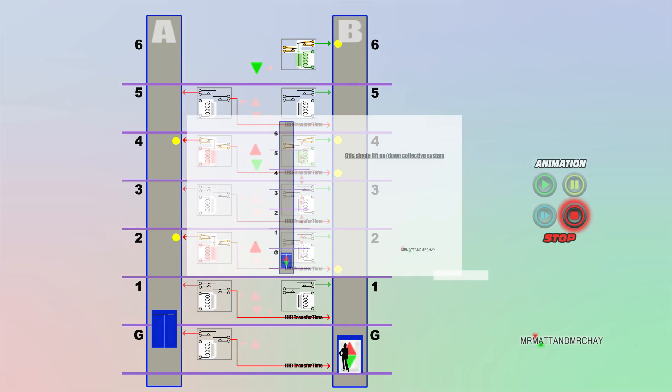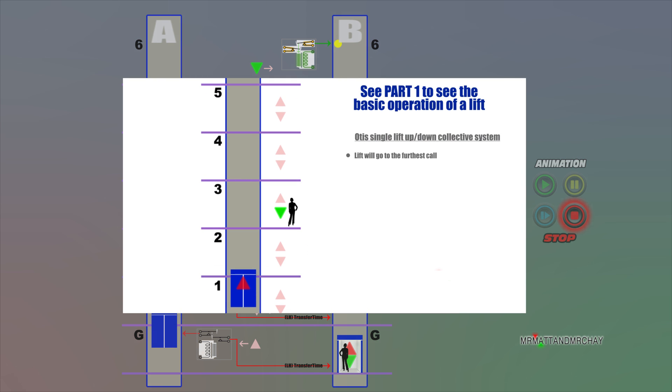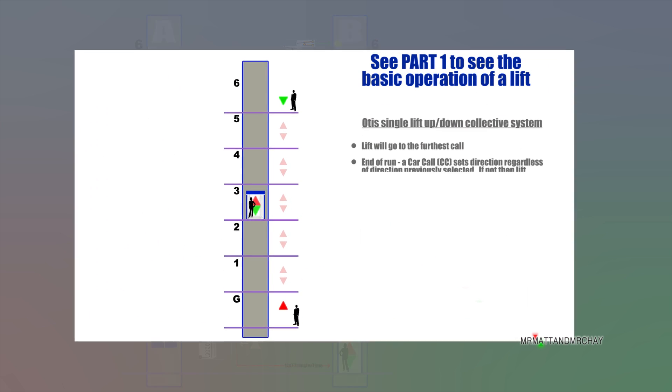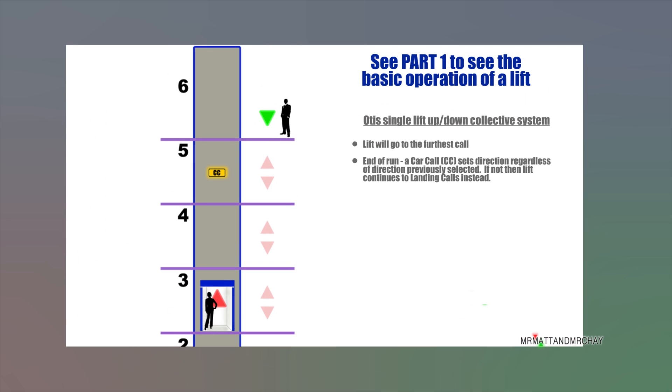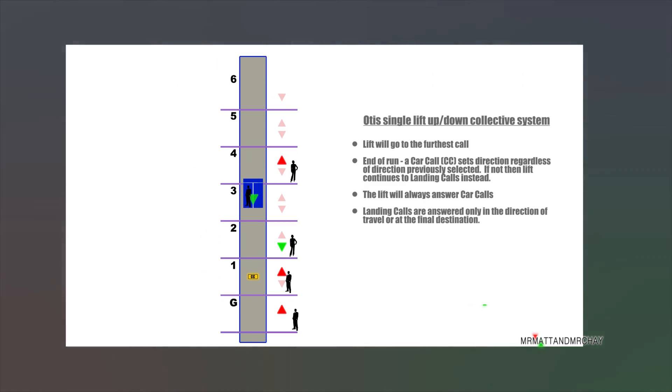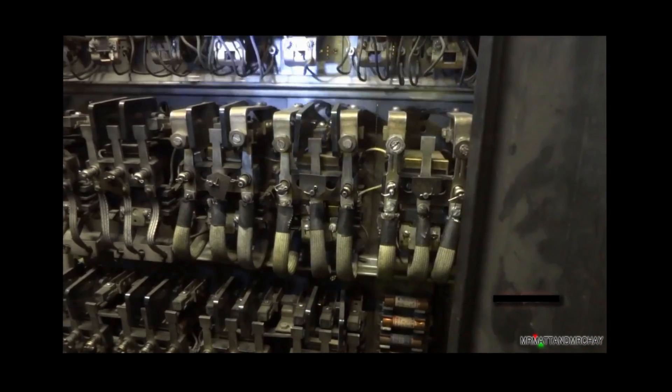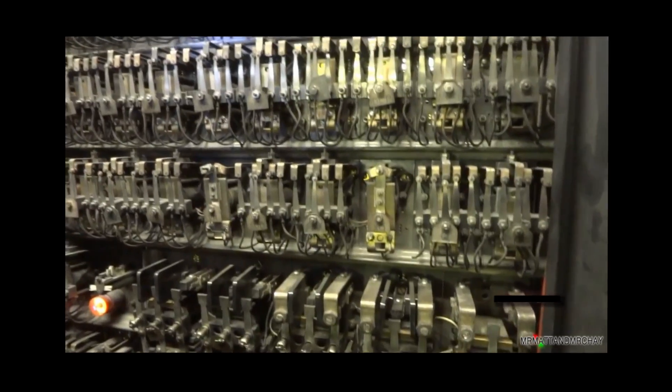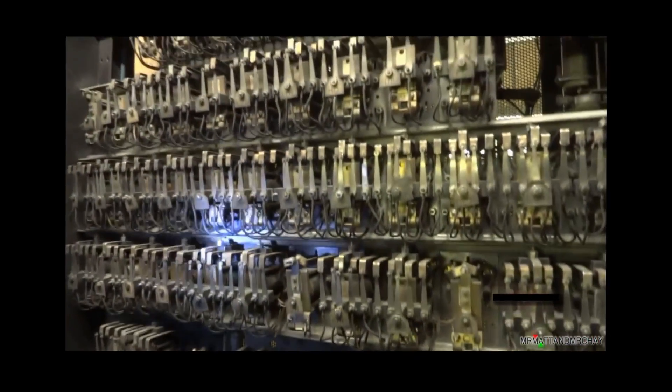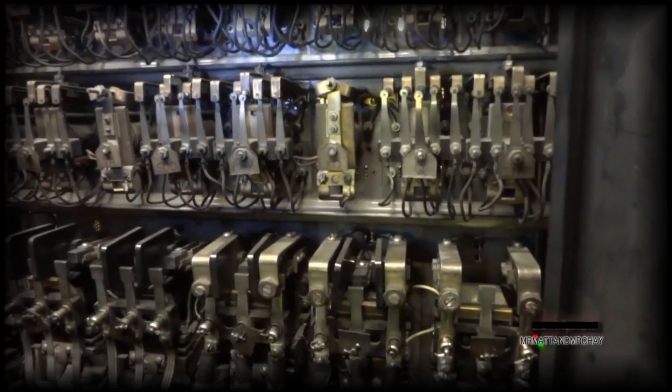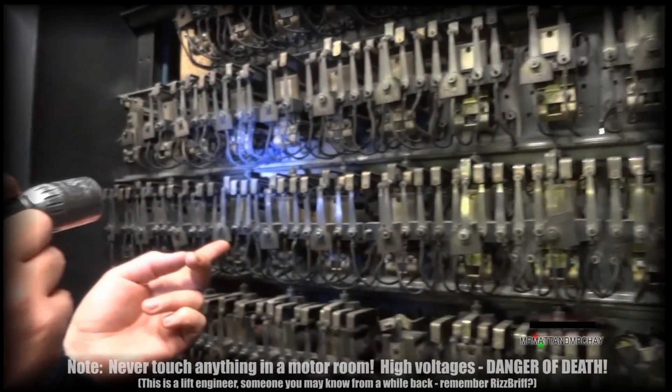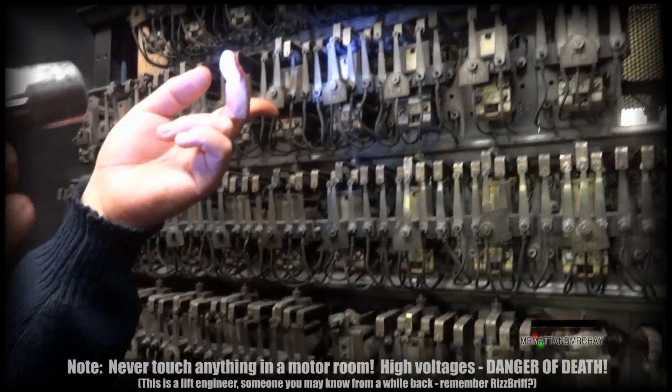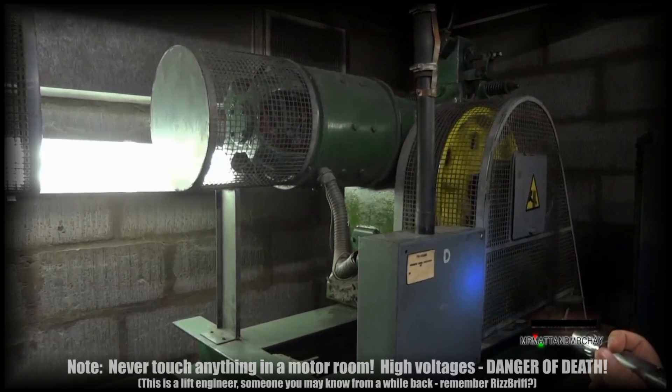To see part one on how a single lift works, this being the Otis system, please click on the link at the top of the screen, or see the video description. I do hope that you found this video interesting, and have learnt a little more about the fascinating world of relay logic systems. Easy to do on a computer, but not so easy when all you have is hundreds of these. A special thank you to Pete Lomas for providing information that went into making this video.